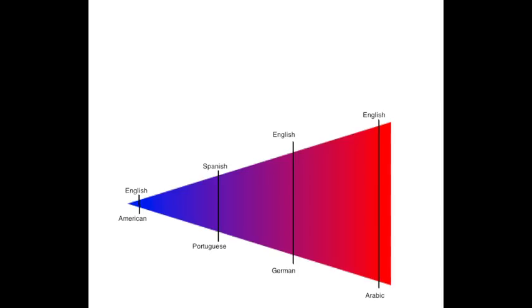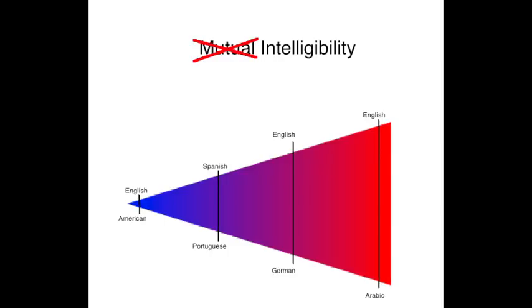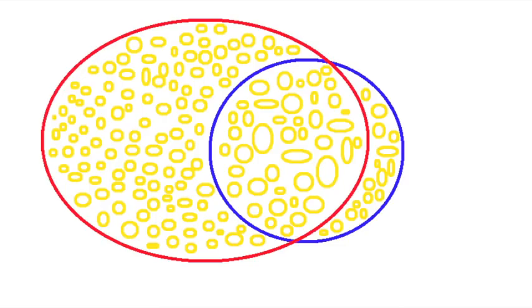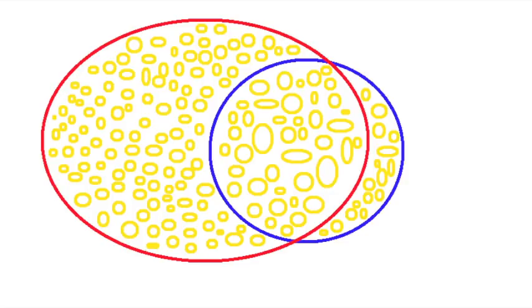On top of this is the fact that intelligibility isn't always symmetrical, like how people from Denmark can understand people from Sweden way better than the reverse. A lot of things can cause this, like one language might have some sounds merged while the other has them unmerged, or one language might have more words that the two have in common and fewer of its own words. But usually the most important factor is when, for some historical reason or another, one country gets exposed to media from the other country way more than the other way around.